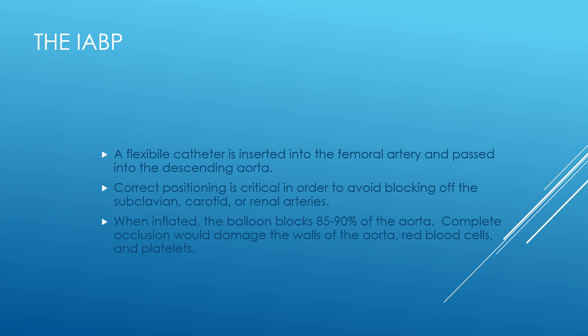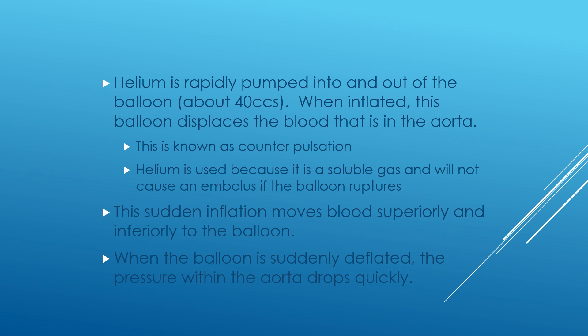The intra-aortic balloon pump is a flexible catheter inserted into the femoral artery and passed into the descending aorta. Correct positioning is critical in order to avoid blocking the subclavian, carotid, and renal arteries. When inflated, the balloon blocks 80 to 95 percent of the aorta. Complete occlusion would damage the walls of the aorta, cause hemolysis, and damage platelets causing platelet dysfunction. Helium is rapidly pumped into and out of the balloon, about 40 ccs. Helium is used because it is a soluble gas and will not cause an embolus if the balloon ruptures.